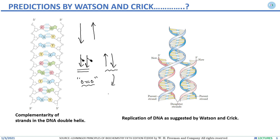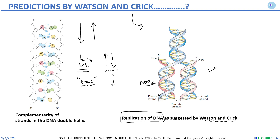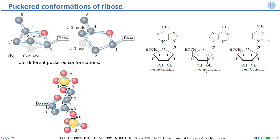Watson and Crick not only gave the structure of DNA but also predicted a possible mode of replication. They suggested that the parent strand could serve as a template to synthesize a new strand. When DNA replication was later studied, the complementarity of nitrogenous bases confirmed their model. Moving to the question of puckering and the puckered conformations of ribose.